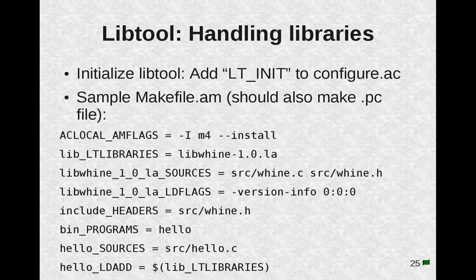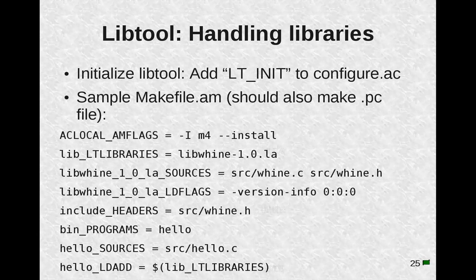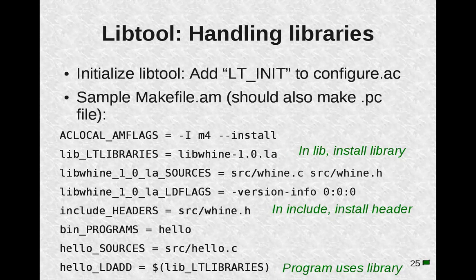Another major component of the autotools is libtool, which lets you handle libraries in a portable way. To initialize libtool, simply add LT_INIT to your configure.ac file and then create your makefile.am using it. In this example, we're saying that in lib, we're going to install a libtool library — that's what lt_libraries means. You'll notice the .la extension, which is the abstract extension for a libtool library. It abstracts away from the actual extensions, which are different between different systems.